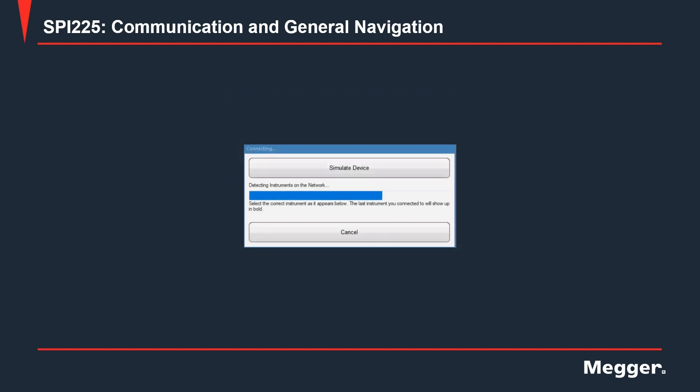After you click OK on the previous screen, the software will try to search for all connected units to the computer. In this case, I'm running simulation mode, so I'm going to click on simulate device.